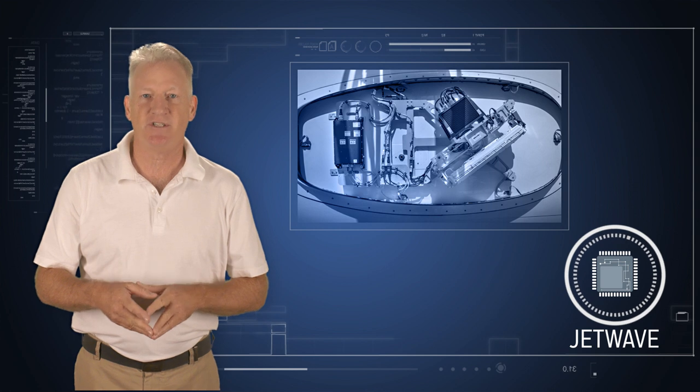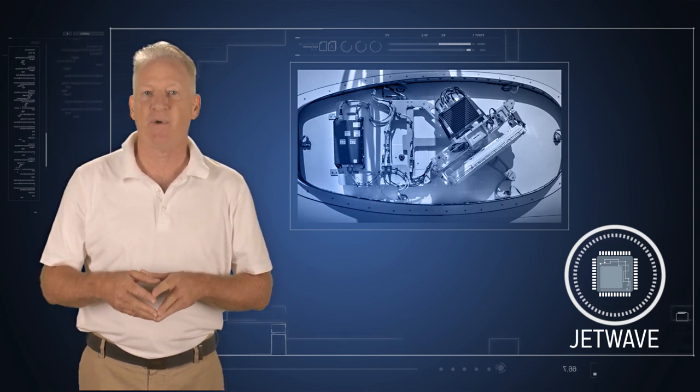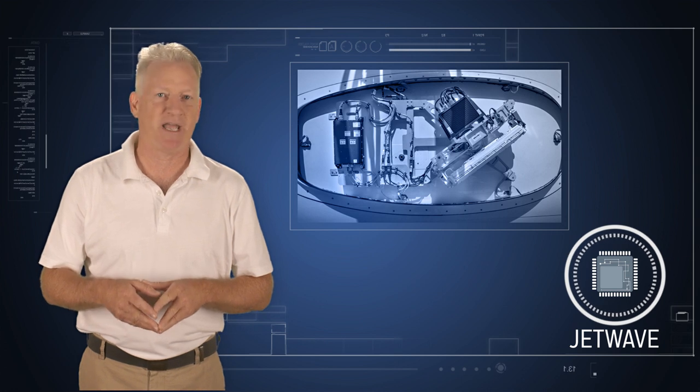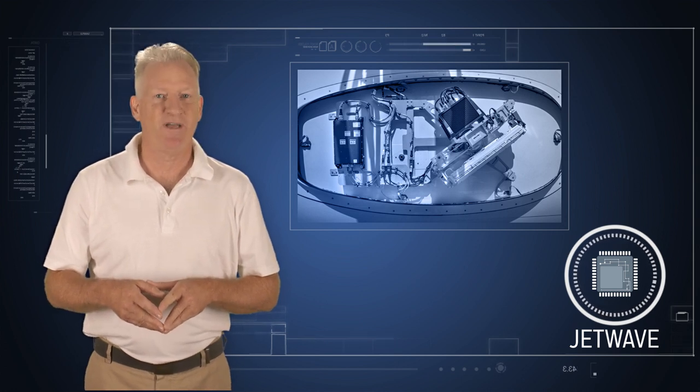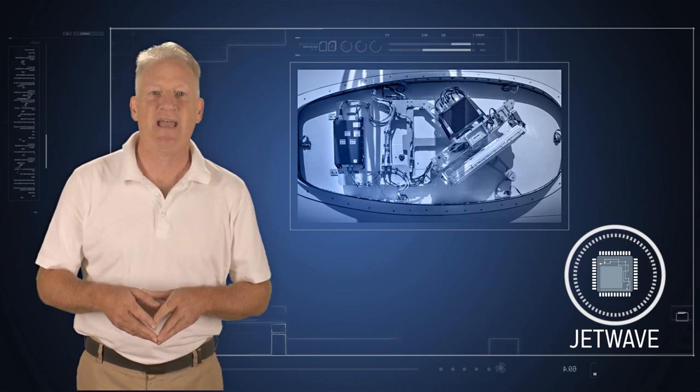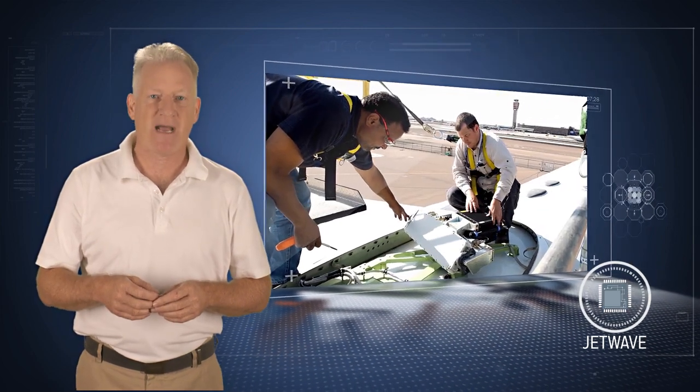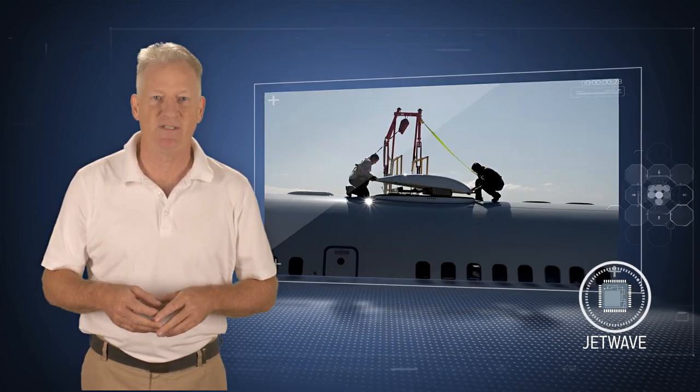In-flight, new generation satellite communication systems are enabling high data throughput for both cabin and cockpit applications. JetWave is the exclusive SATCOM hardware for Inmarsat's Global Express KA-Band broadband network. Global Express delivers worldwide high-speed connectivity and is specifically designed for mobile applications, maximum flexibility, and ease of installation.